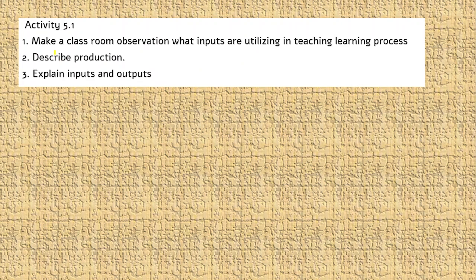Activity 5.2 is a classroom observation in which inputs are utilized in the teaching and planning process. If you do not have the learning process, you will not have the same input. While the learning process increases the value of the language and its meaning through teaching services, it takes longer to increase your number in the context. This is the same as the input process — the product describes the product.